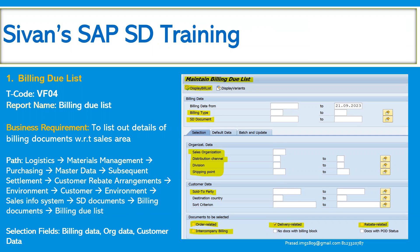And one more thing — the business may run this particular transaction code's program in the backend, so that every one hour, every two hours, or once in five hours, this particular program will be running in the backend as a batch job.